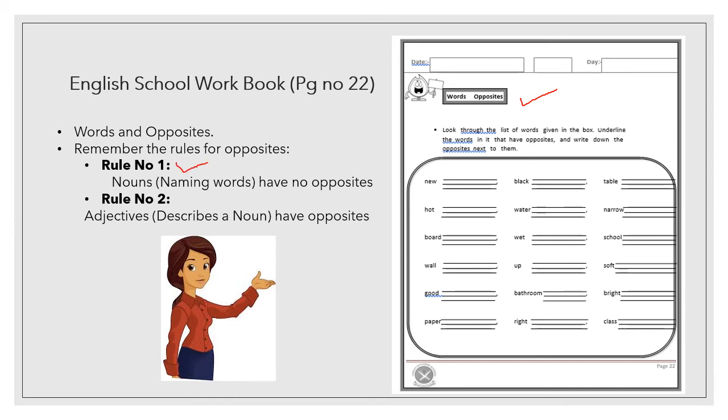So, you have to remember two rules. Rule number 1. Nouns have no opposites. Noun has no opposites. And rule number 2. Adjective, that is, those words that describe the noun have opposites. Okay. You have to remember these two rules very carefully and make sure that you don't forget it.